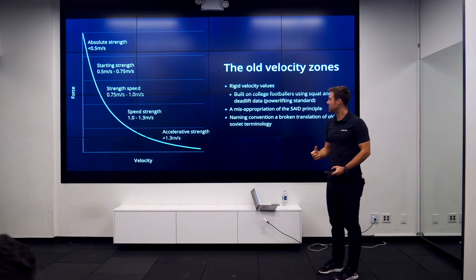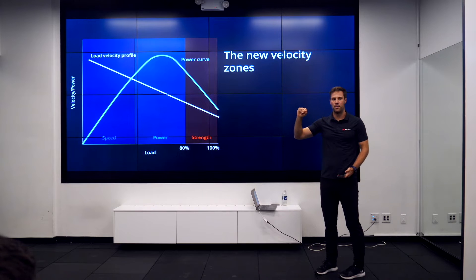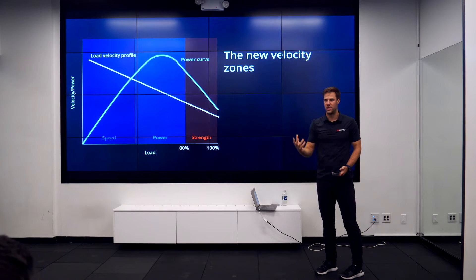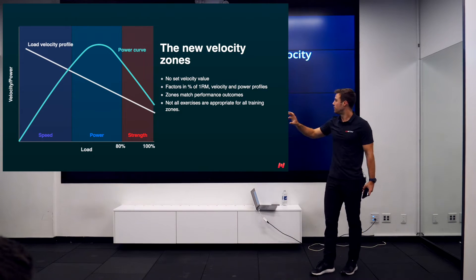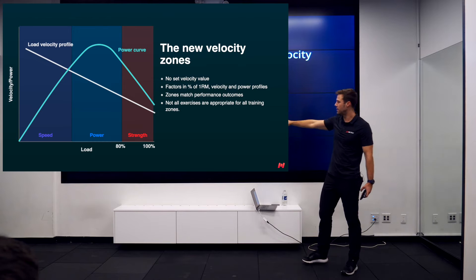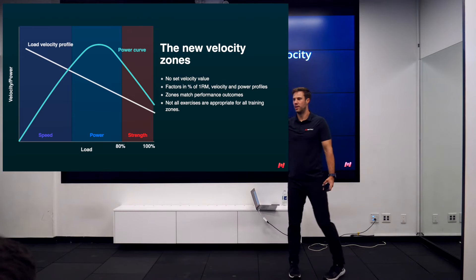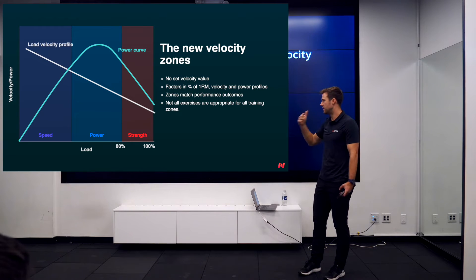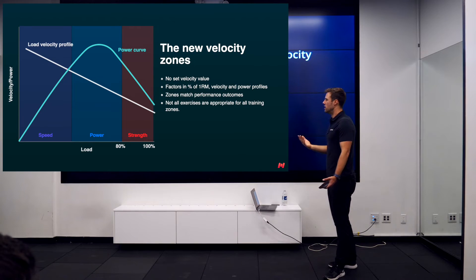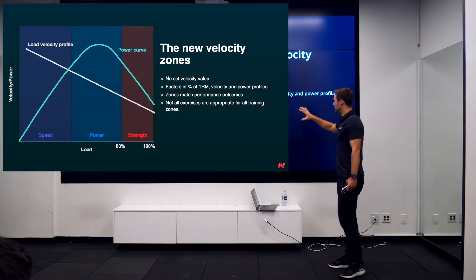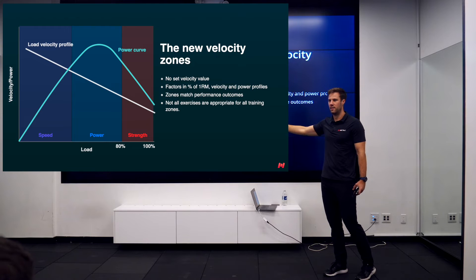Plus, the idea of rigid numbers just doesn't work when we think about the SAID principle. So this is my alternative model: three zones — speed, power, strength — fitting three variables. There are no set velocity numbers. The only fixed number is 100%, because you can't go above your current limit, and 80%, which is about the point where strength training really kicks in. For an intermediate to advanced lifter, you need to be lifting loads at or above 80% of your 1RM — so six-rep-max weights. The zones match your performance outcomes, so athletes better understand the intent of the session.